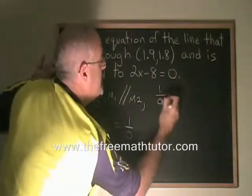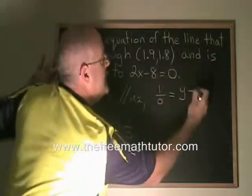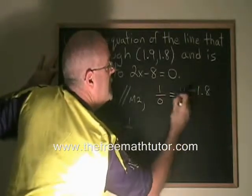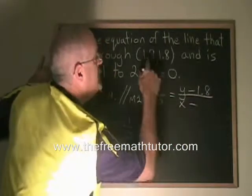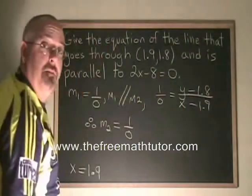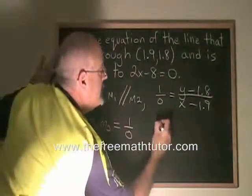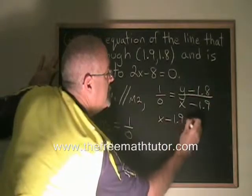1 over 0 is equal to y minus 1.8 over x minus 1.9. Cross multiplying, I get x minus 1.9 is equal to 0.